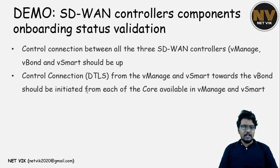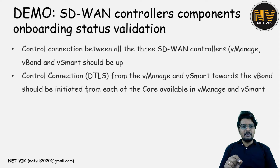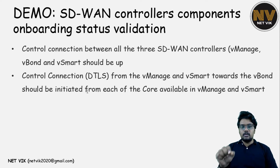Control connections from the vSmart and vManage towards vBond are initiated from all the cores available. This is the answer to the question raised in the previous videos. There is a control connection established from vManage from each of its cores to the vBond. In our case, vManage had eight cores, so that's why we noted eight control connections between vManage and vBond. Whereas in vSmart, we had two cores, so it initiated two control connections from each of its cores to the vBond.